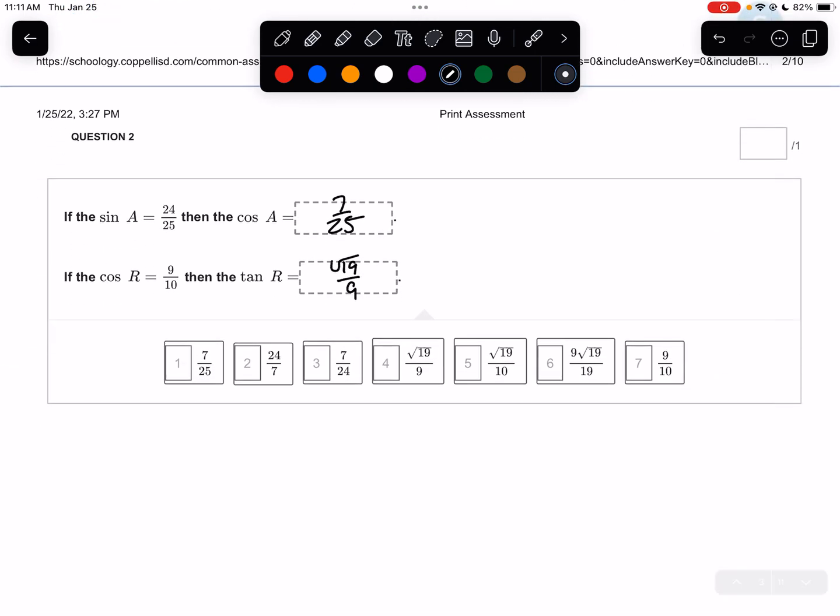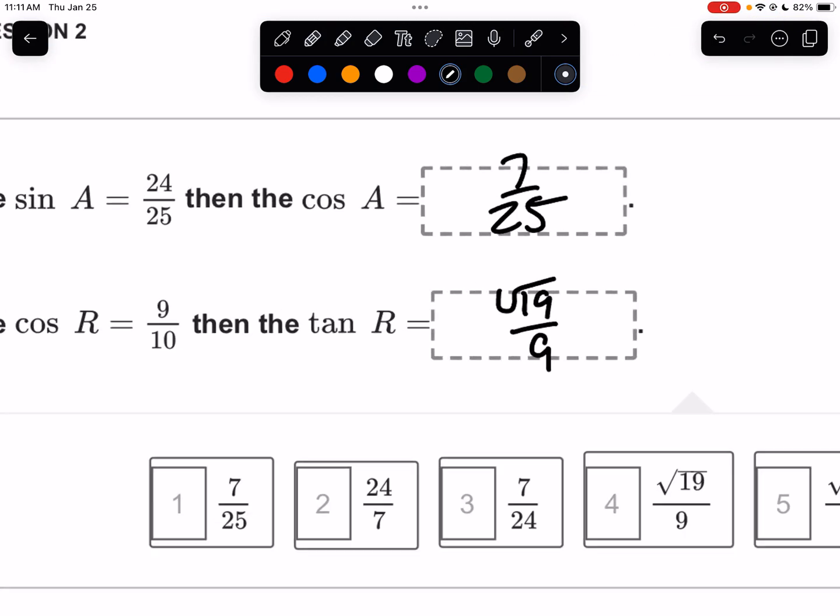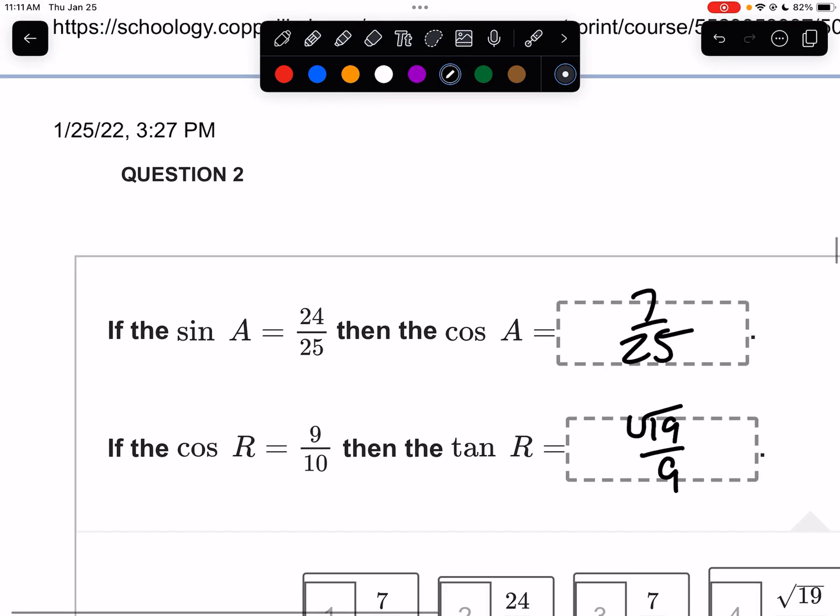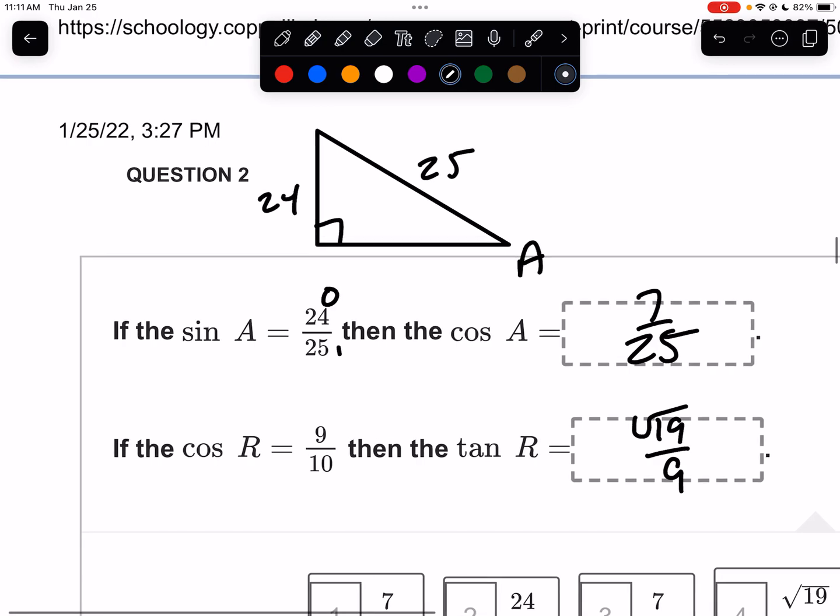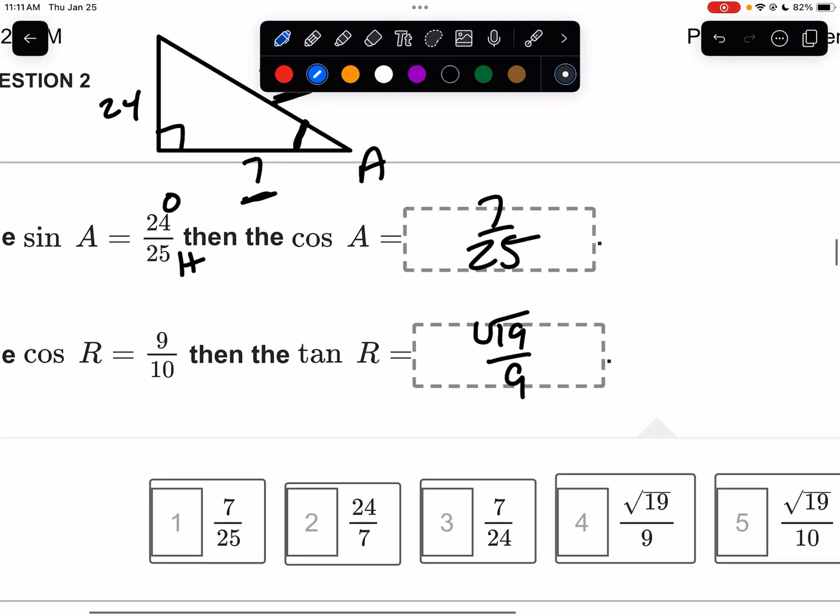All right, number two. If I tell you that the sine of A is 24 over 25, what you can do is draw a right triangle, call one of the corners A, not the 90, not the 90. But if that is corner A, wouldn't opposite be 24 and the hypotenuse be 25? Right? Isn't this opposite divided by hypotenuse? The answer is yes. So what's the third side? That's a triple. That's a 7, 24, 25. So what is the cosine of A? The cosine of A would be adjacent over hypotenuse, 7 over 25.